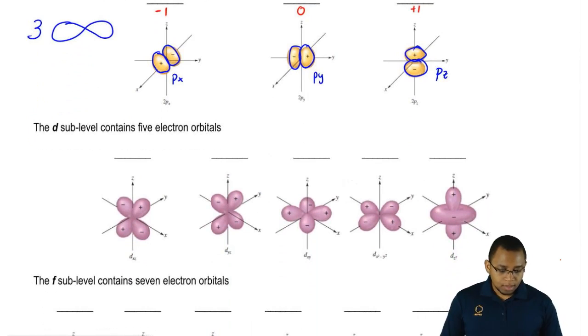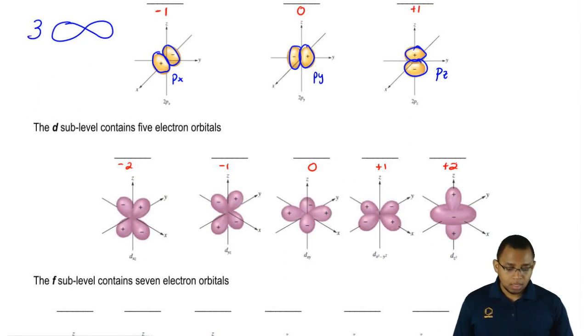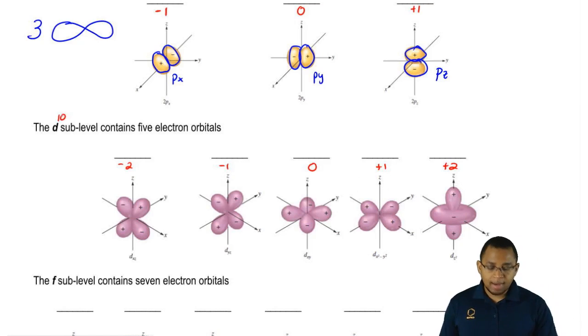For D, it'd be minus two, minus one, zero, plus one, plus two. And remember, for D, each one holds two electrons, so it can go up to ten. Its shapes are four four-leaf clovers, and then one barbell with the ring around it.